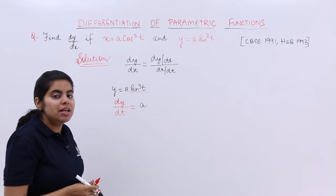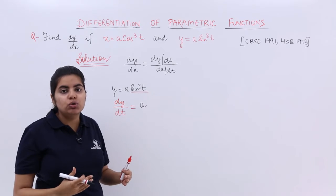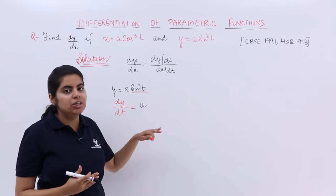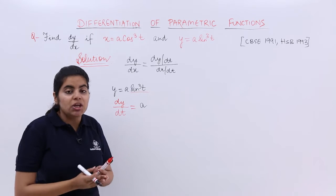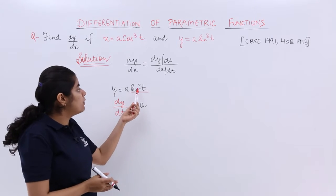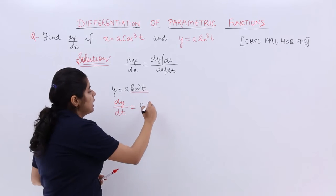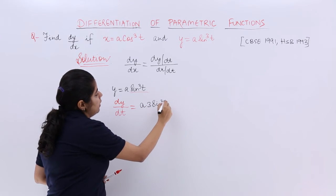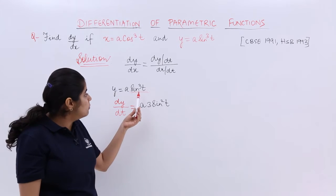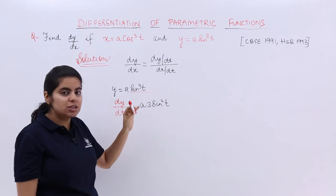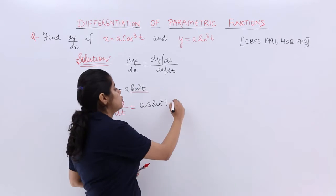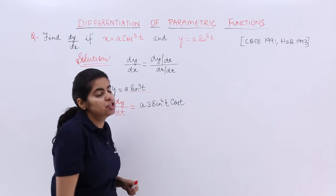Now since it is sin cubed t, it is not only sin t. You cannot directly write cos t. You have to use the formula which is the power formula. It becomes 3 sin squared t first of all. Then by chain rule, when power has been treated, you have to treat sin t also, so it becomes the differentiation of sin t, which is cos t.